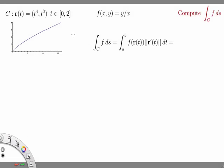Let's work through an example of computing a curve integral of f over a curve C ds. Our function f of xy is equal to y over x, so we have a standard function of two variables, and our curve C is given by the parameterization r of t equals t to the fourth comma t cubed.